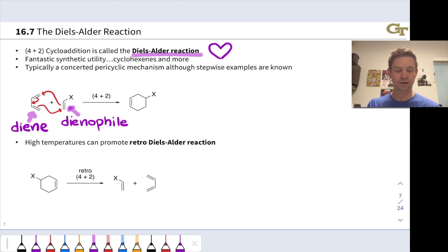We're going to use these terms throughout our exploration of the Diels-Alder reaction. The diene, 4-pi component, reacts with the dienophile, the 2-pi component.